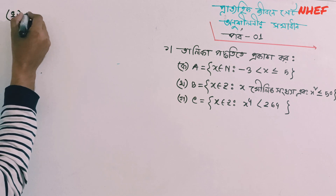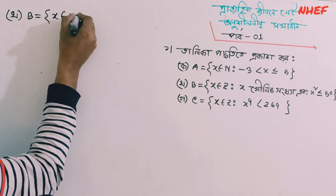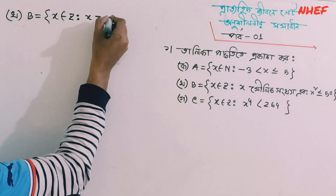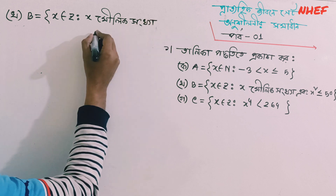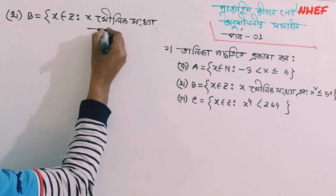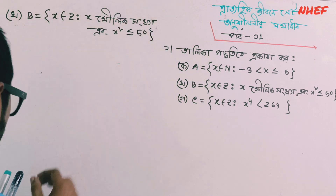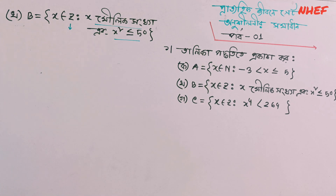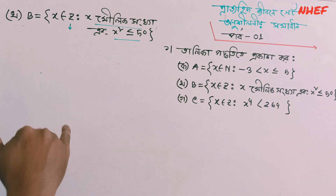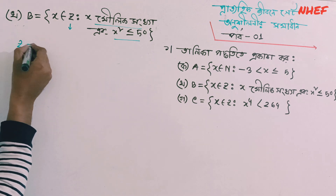B is equal to x belongs to Z. X is a prime number — x is a prime number such that x squared less than equal to 50. If you want to see Z, then you can see Z. Z is the same. So what is Z?